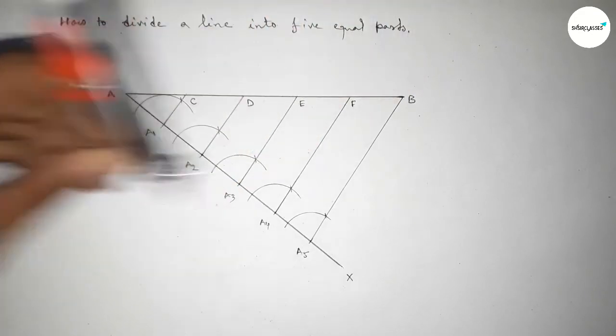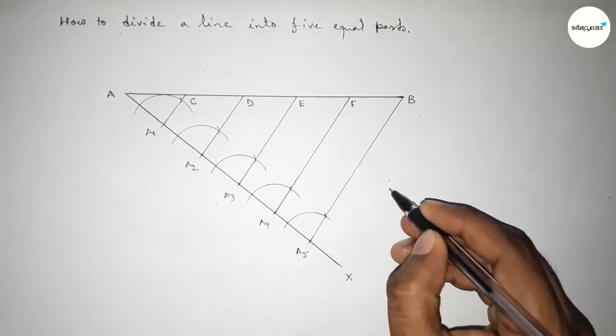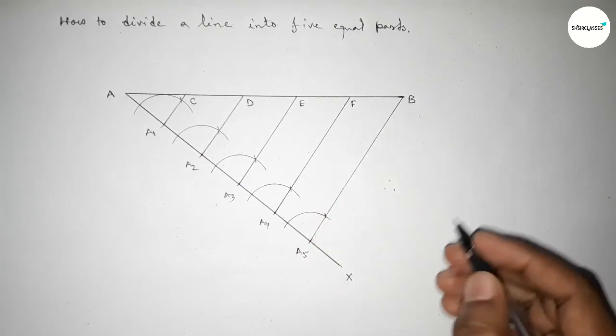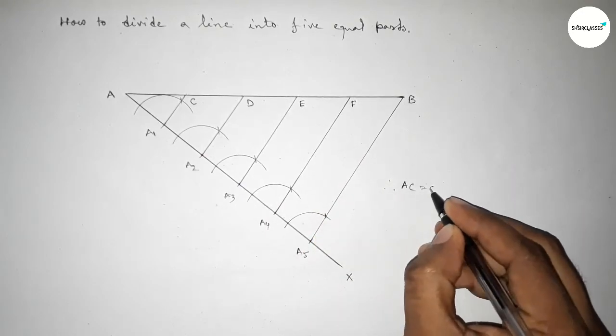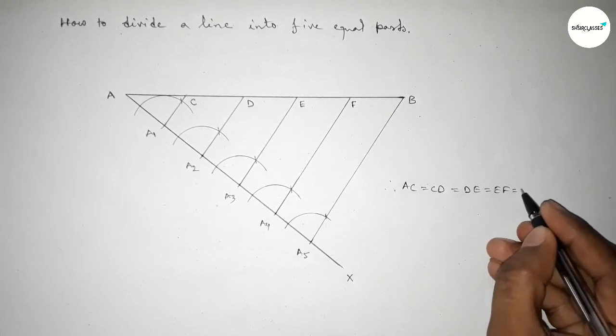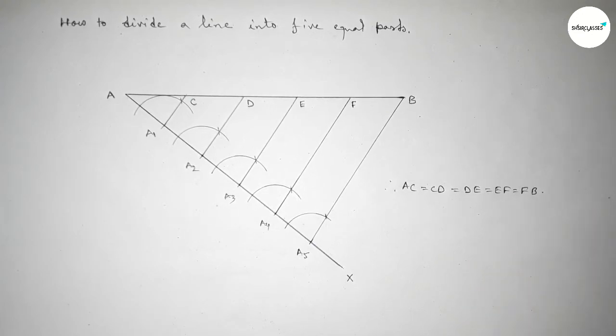So therefore, distance AC equal to CD equal to DE equal to EF equal to FB. So this is the process to divide a line into five equal parts by using compass in an easy way. Thanks for watching.